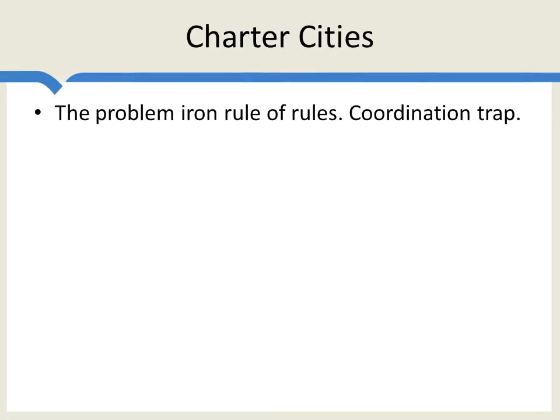Most recently, Romer has come up with a startling new idea for development: charter cities. The problem is what I call the iron rule of rules. Some rules — things like the rule of law, anti-corruption, honesty in government — are hard to transmit. Why? They may require a lot of interaction and coordination. It's like getting everyone to switch from driving on the left-hand side of the road to the right-hand side. Everyone must coordinate on the new equilibrium, and that's really hard. You can't do it halfway — you've got to go all the way or nothing.